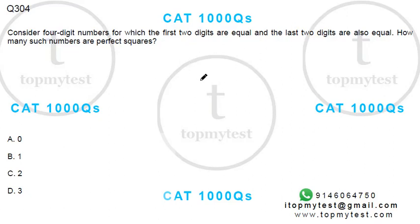Alright, this is a question on numbers. It came up in CAT previously. Consider a four-digit number in which the first two digits are equal and the last two digits are also equal. So it will be ppqq.